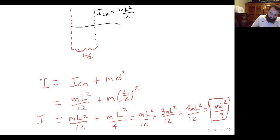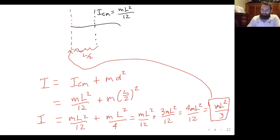So ML² over 3 is the final answer for the moment of inertia about the axis on the edge of the rod. The parallel axis theorem is a powerful tool because it's easy to calculate the moment of inertia about the center of mass, and then you can just shift that axis using the parallel axis theorem, making the calculus much easier. Don't forget to like, subscribe, and ring the bell for notifications.